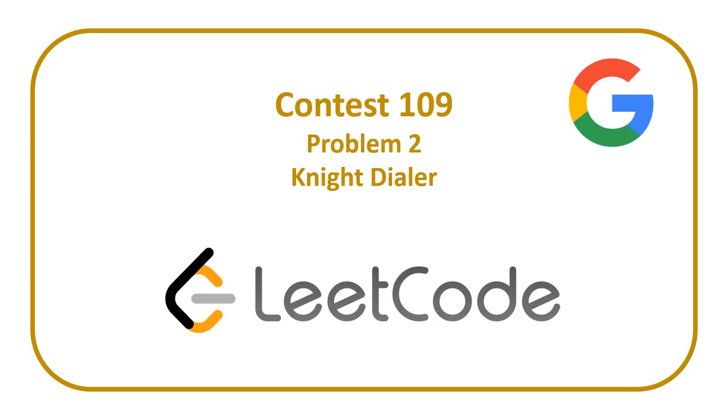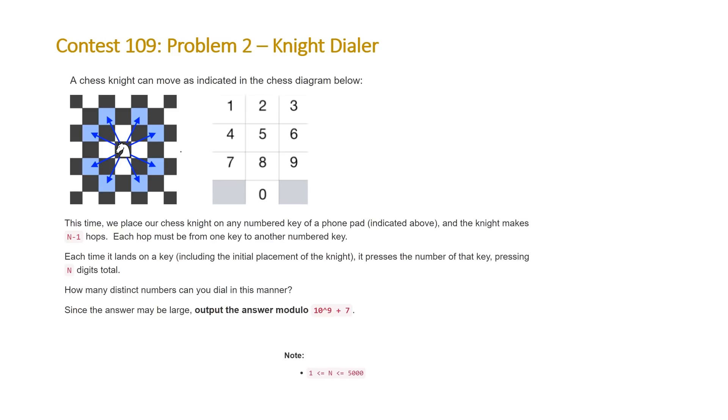In today's video, I'll be covering the solution to Problem 2 from the LeetCode contest number 109, entitled Knight Dialer. And I will explain why there is a Google logo in the top right-hand corner after I cover the solution. The problem states, a chess knight can move as indicated in the chess diagram below. This time, we place our chess knight on any numbered key on a phone pad, indicated above, and the knight makes n-1 hops. Each hop must be from one key to another numbered key. Each time it lands on a key, including the initial placement of the knight, it presses the number of that key, pressing n digits total. How many distinct numbers can you dial in this manner? Since the answer may be large, output the answer modulo 10 to the 9th plus 7. And note that for this problem, the constraints of n is that it is going to be less than 5,000.